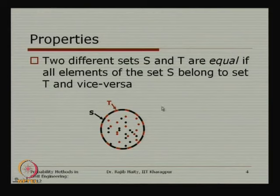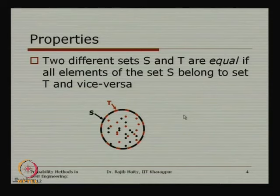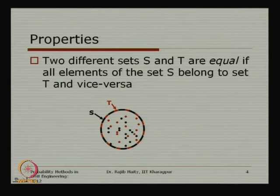In the example of throwing a die with six different outputs: if one set is defined as the even outcomes, and another set is defined as consisting of 2, 4, and 6, then we can say these two sets are equal.